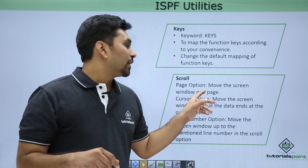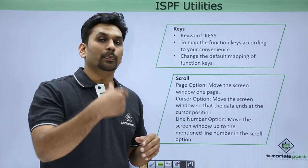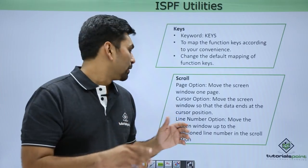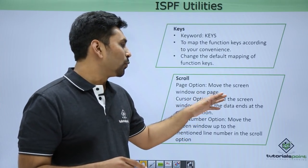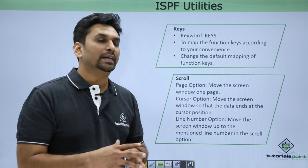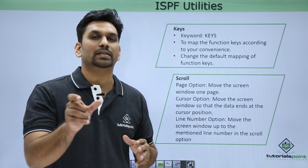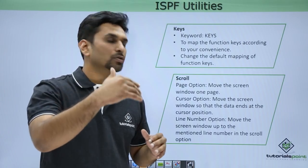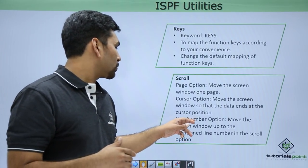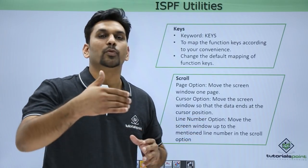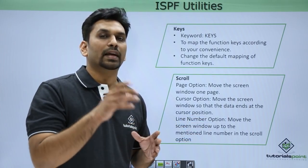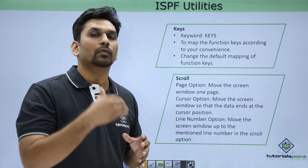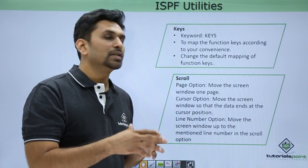The page option moves the screen window by one full page, whether up, down, left, or right. The cursor option moves the screen so that data ends at the cursor position — when you press F8, the screen scrolls to where you placed the cursor. You can also specify a line number: for example, type '5' so that pressing F8 scrolls down exactly five lines each time.